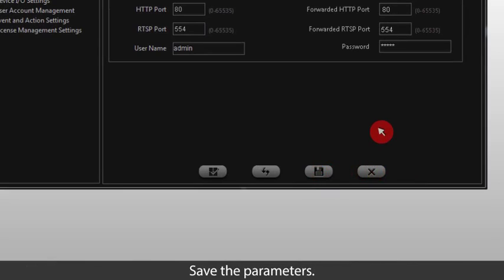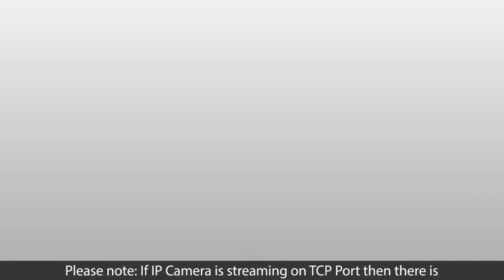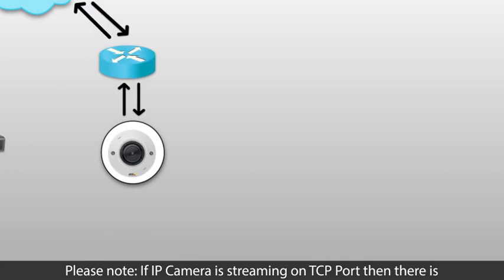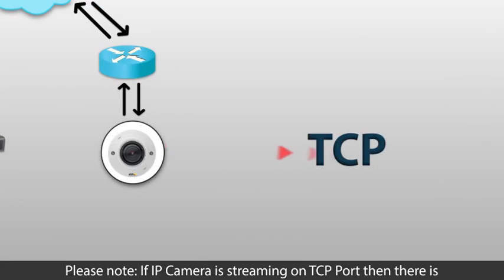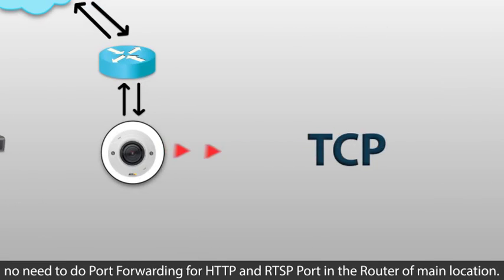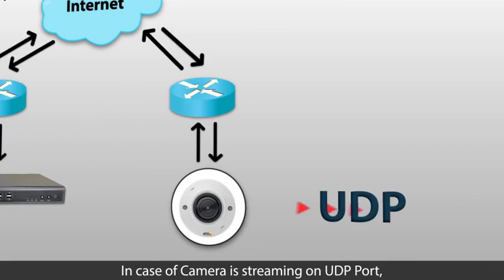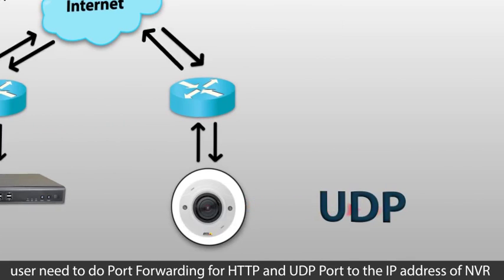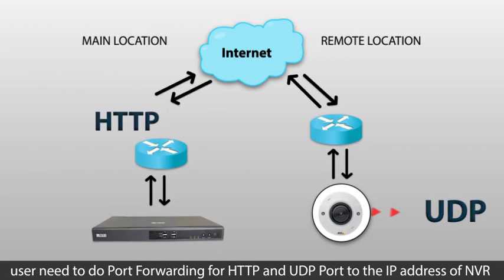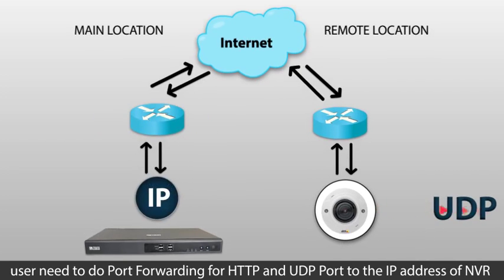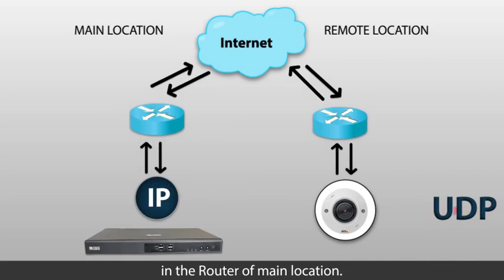Please note, if the IP camera is streaming on TCP port, there is no need to do port forwarding for HTTP and RTSP port in the router of the main location. In case the camera is streaming on UDP port, the user needs to do port forwarding for HTTP and UDP port to the IP address of the NVR in the router of the main location.